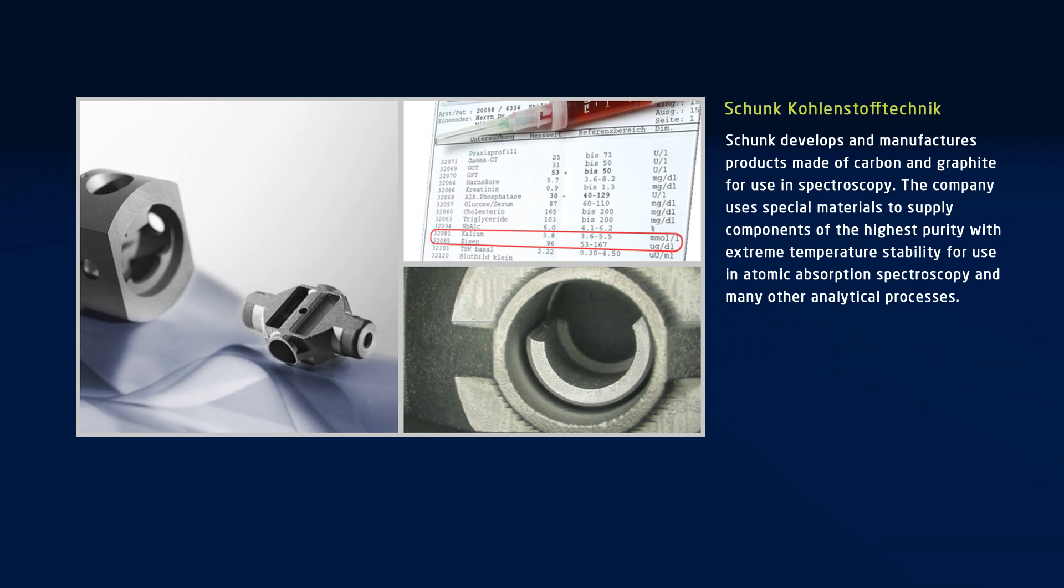Schunk develops and manufactures products made of carbon and graphite for use in spectroscopy. Thanks to specially developed materials, the company can supply components of the highest purity with extreme temperature stability for use in atomic absorption spectroscopy and many other analytical processes. Schunk has established itself here as a leading global supplier.